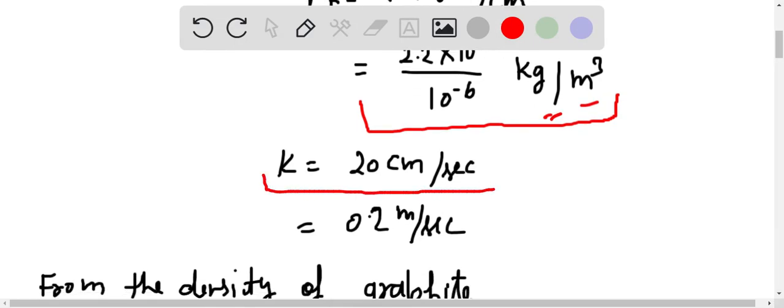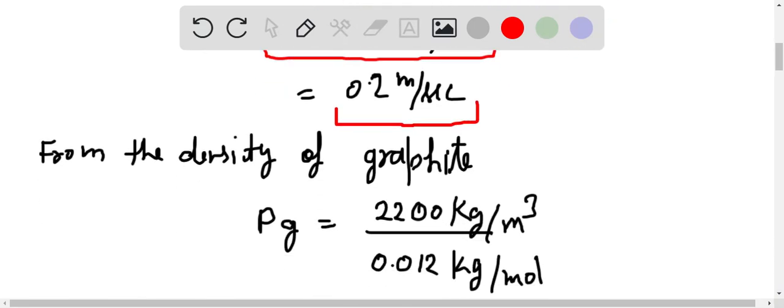Now k equal to 20 centimeter per second, and also 0.2 meter per second. Now from the density of graphite...